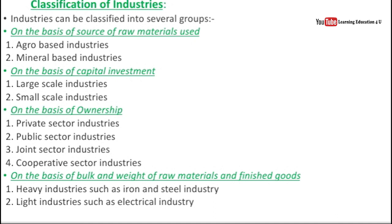Based on capital investment, industries are classified as large-scale industries and small-scale industries. Classification on the basis of ownership: private sector industries are owned by private individuals; public sector industries are owned by the government; joint sector industries are owned by both private individuals and government; and cooperative sector industries are formed by groups of people.